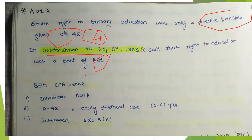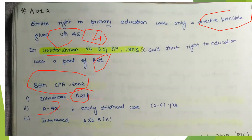After that, the 86th Constitutional Amendment Act of 2002 introduced Article 21A. This amendment also changed Article 45 of the directive principles to state that the state shall make available early childhood care for all children up to the age of 6 years.